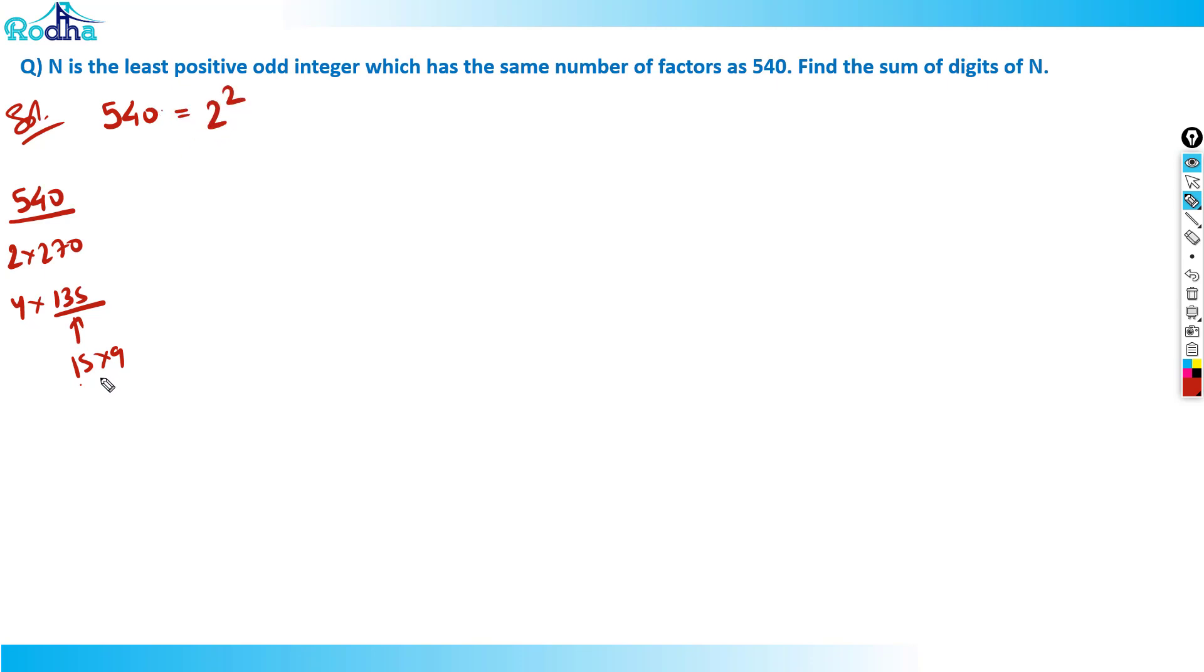so in 540, 2 will occur 2 times 4 square, 15, 1, 3 and in 9, 2, 3, that is 3 cube into 5 are there. How many factors we have guys here? We have 2 plus 1, 3 into 4 into 2, we have got 24 factors here.